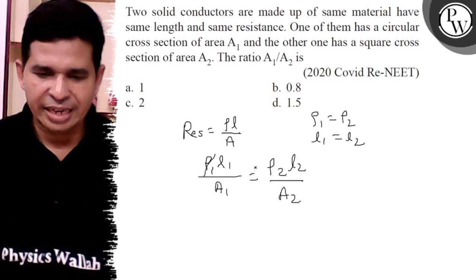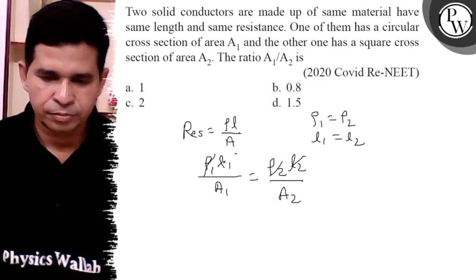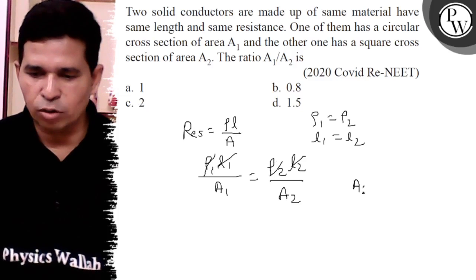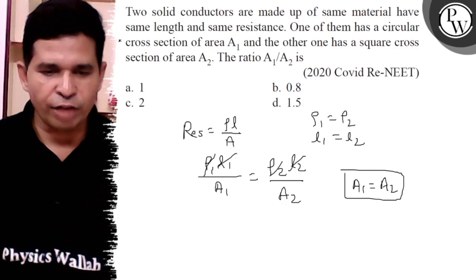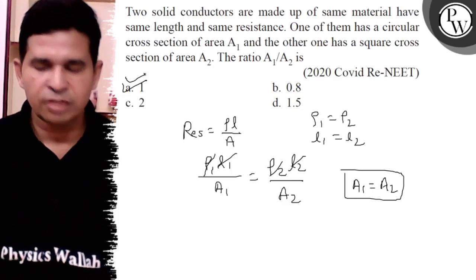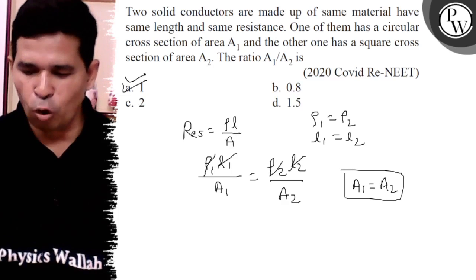So it will cancel out, meaning A1 is equal to A2, otherwise the resistance would not be equal. So the final answer is option A, 1 to 1. Thank you, all the best.